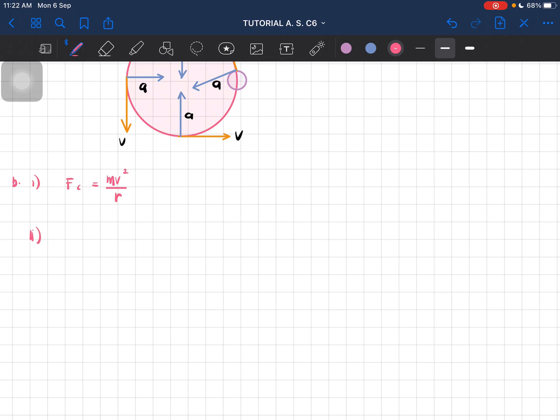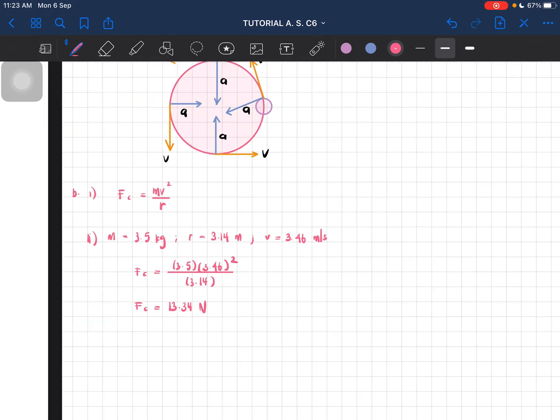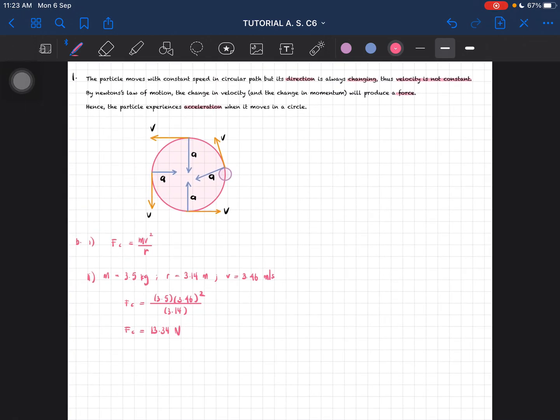Question roman 2 asks us to use this equation to find the centripetal force. The mass is 3.5 kilograms, the radius is 3.14 meters, and the speed is 3.46 meters per second. Using this formula: m is 3.5, v is 3.46 squared over r which is 3.14. You should be getting the value of 13.34 newtons. This is your solution for question number one.